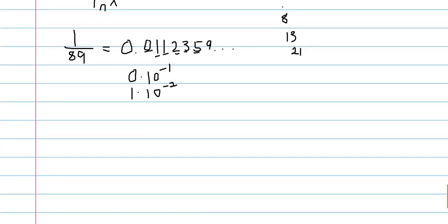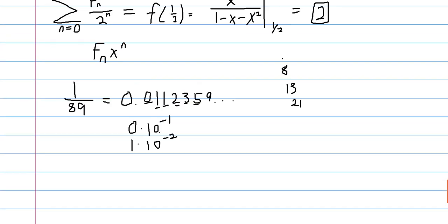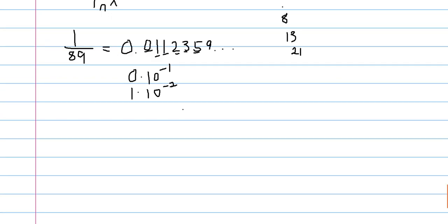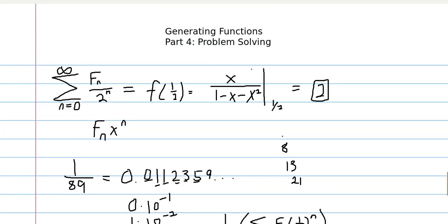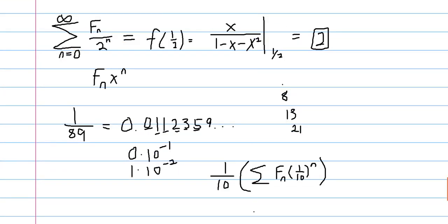Now in our specific case, we aren't starting with equal indices, like this is F sub zero, but this is ten to the negative one. So we actually have to factor out one tenth here. And then inside we get a Fibonacci generating sum. And so what we have is one tenth is our x. So we're evaluating the Fibonacci generating function at one tenth.